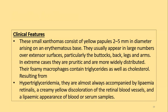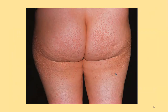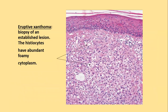Their foamy macrophages contain triglycerides as well as cholesterol. They result from hypertriglyceridemia, which is almost always accompanied by lipemia retinalis — a creamy yellow discoloration of the retinal blood vessels — and lipemic appearance of blood and serum samples. On histology, eruptive xanthomas are characterized by sheets of foamy macrophages, which differ from those in lepromatous leprosy by the absence of a grenz zone.